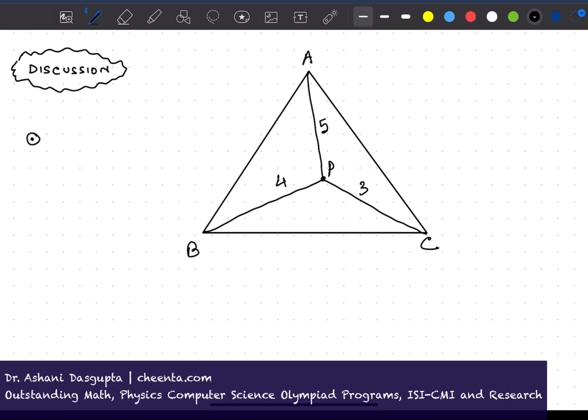So first step is to rotate triangle PAC about C counterclockwise by 60 degrees. So you have to be very careful. Whenever you are using rotation, you have to say what is the center of rotation, through what degree you are rotating, and whether you are rotating clockwise or counterclockwise. So what happens is that CA exactly falls on CB because it's an equilateral triangle. So this angle is 60 degrees and CA is equal to CB. So they will exactly fit in.